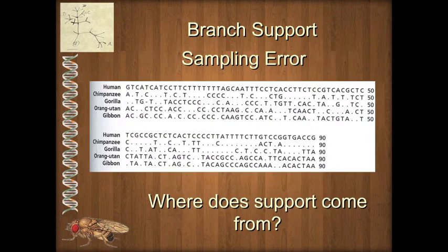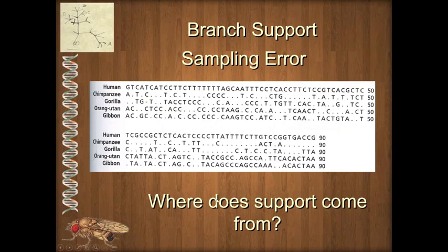We may also have some sampling error. If you have a data set made up primarily of just one gene, then any bias inherent in that gene will be expressed in the analyses. Sampling error can come from a gene bias, or from not having enough species represented. All of those things can lead us to erroneous results, and so branch support is really looking at where does our branch support come from.